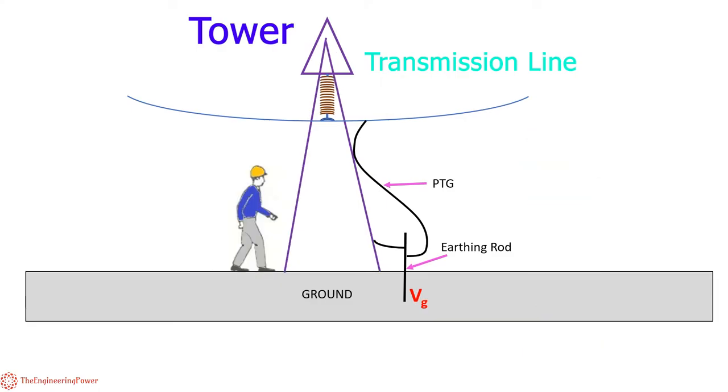Similarly, consider another person standing at point C who touches the tower during fault conditions. He will also suffer electric shock due to the potential difference between hand and feet of the person. As the hand of the person is touching the tower, which is at ground potential VG, whereas his feet are at point C, which are at a different potential VC. This potential experienced by the person standing on ground while touching the tower is called touch potential.